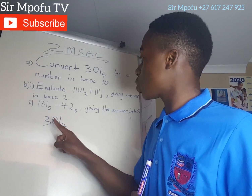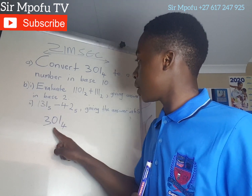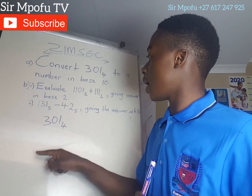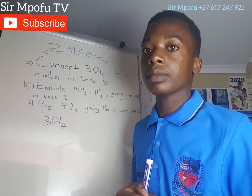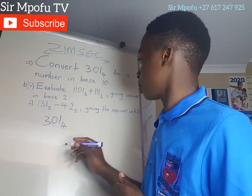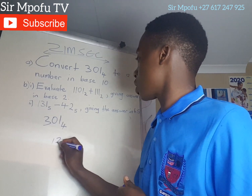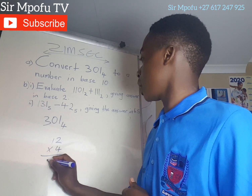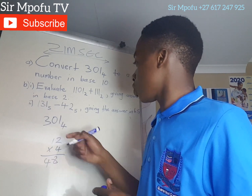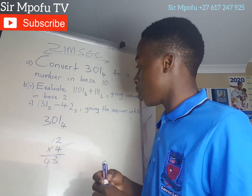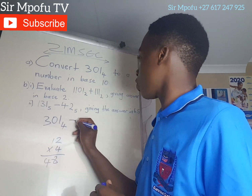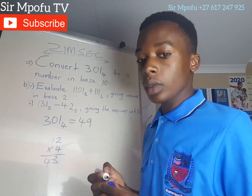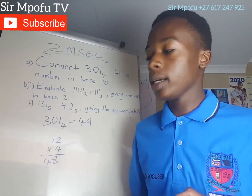Then you say 12 times 4, that is 48. Let's double check — yes, it's 48. Then 48 plus 1 gives you 49. So 301 in base 4 equals 49 in base 10.